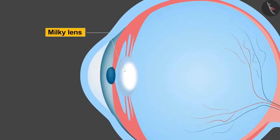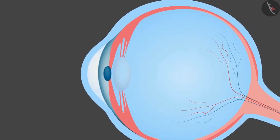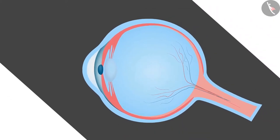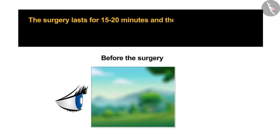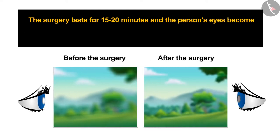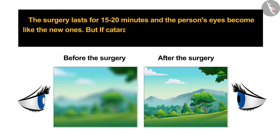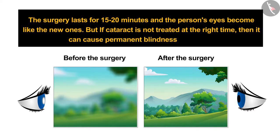The only way to cure this defect is surgery. The doctor replaces the defected lens with another artificial lens. Cataract is a very common disease from which we should not be afraid. The surgery lasts for just 15 to 20 minutes and the person's eyes become like new. But if cataract is not treated at the right time, then it can cause permanent blindness.